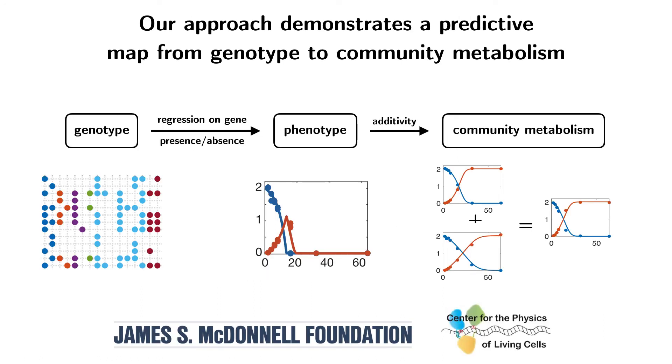In summary, we've made great progress towards demonstrating a predictive mapping between genotype and community metabolism for denitrifying bacteria. We demonstrated that the gene presence and absence of denitrification-related genes are able to predict the metabolic dynamics of individual strains. We've also demonstrated that simple community dynamics are predictable from individual strain information.